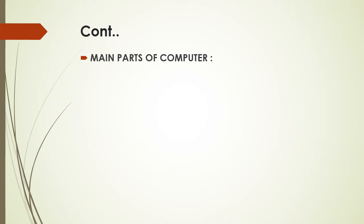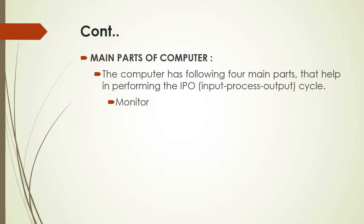Now there are four main parts of a computer: monitor, CPU, keyboard, and mouse. These main four parts are used for performing the IPO cycle. IPO means Input-Process-Output cycle. The IPO cycle is the basic working cycle of a computer — we give input to the computer, then the CPU processes that input data and gives us the output. This working cycle is called IPO.